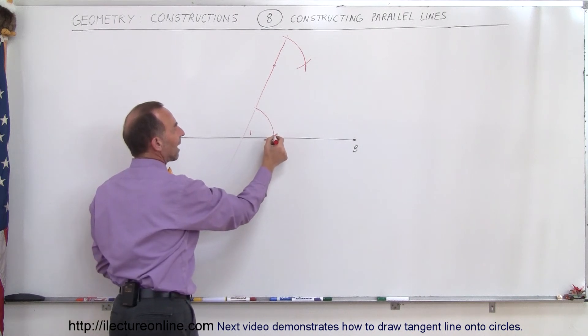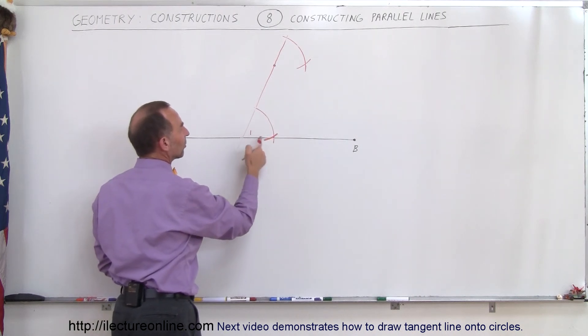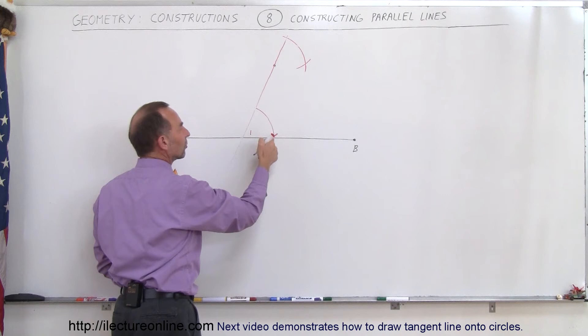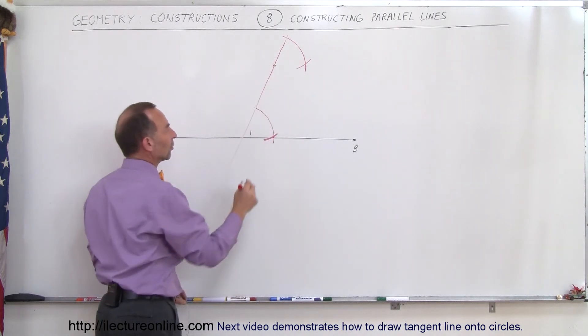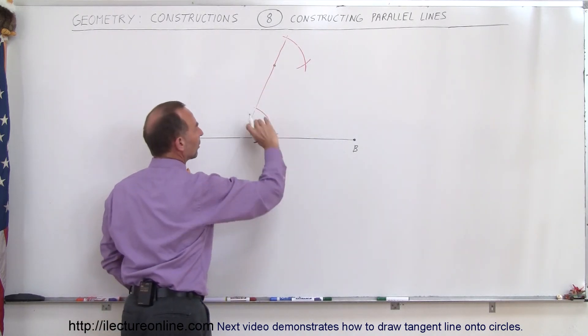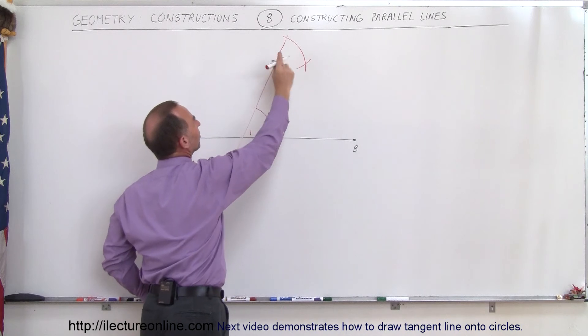Notice that those two lines have to cross here, because the distance from there to there must equal the distance from there to there. And same over here. So notice that that goes right through here. So this angle will be exactly the same as this angle.